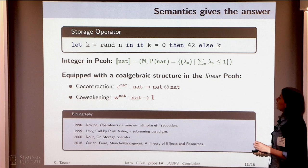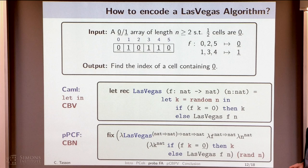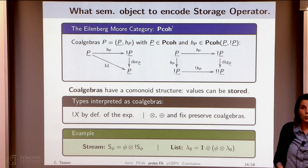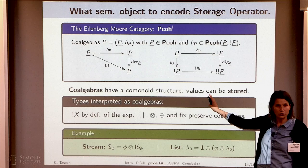So we were able to put this storage operator in the syntax and then interpret our probabilistic algorithm. But we were not still satisfied with this. We wanted to know on which types we can define a storage operator. The structures we need are the co-contraction and co-weakening.